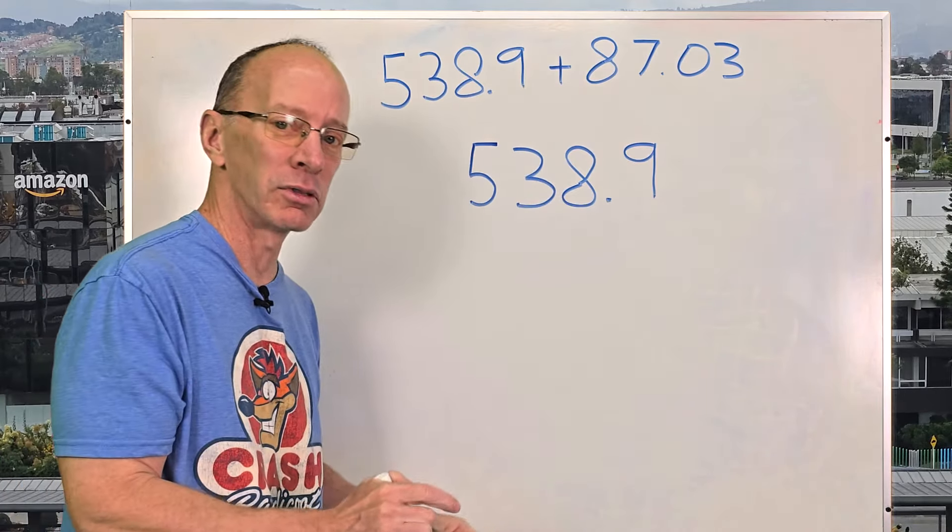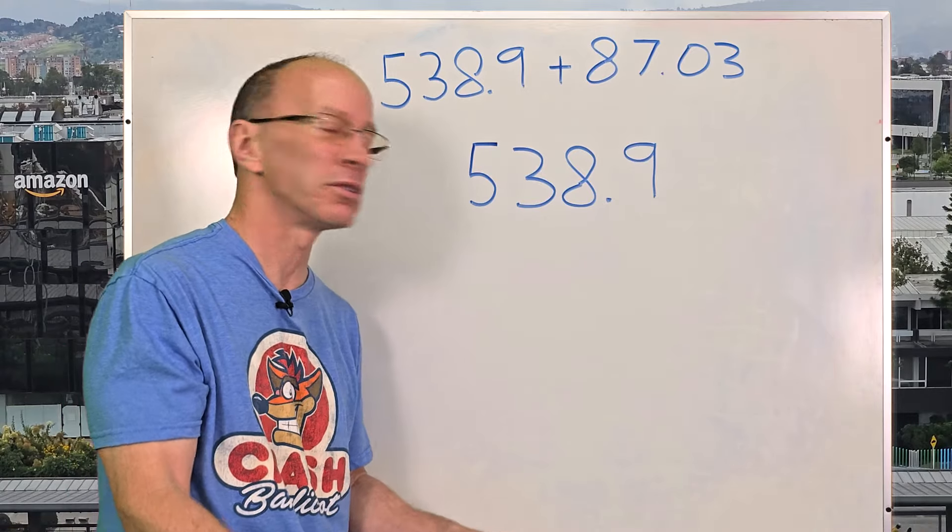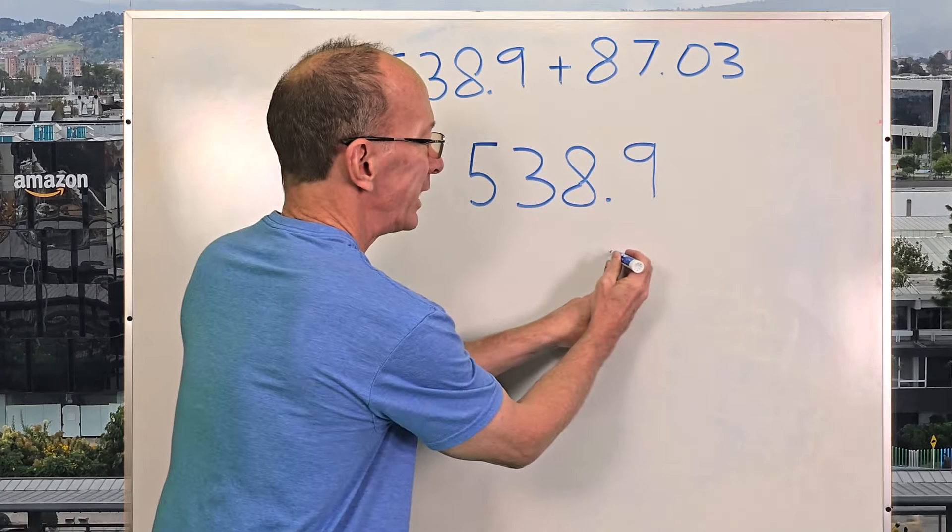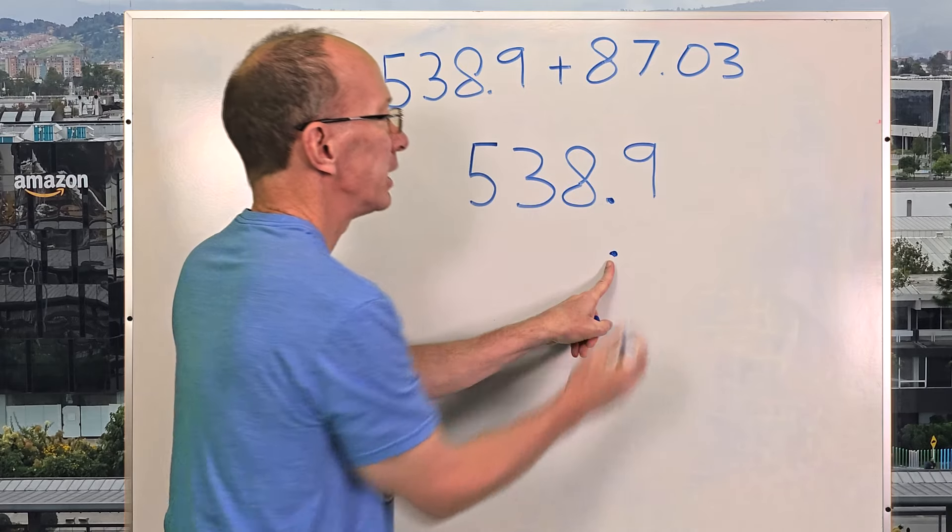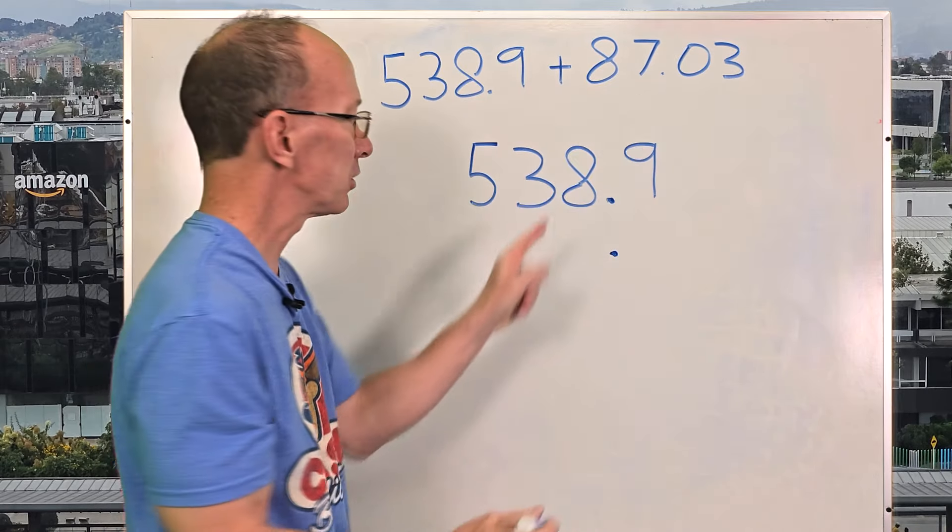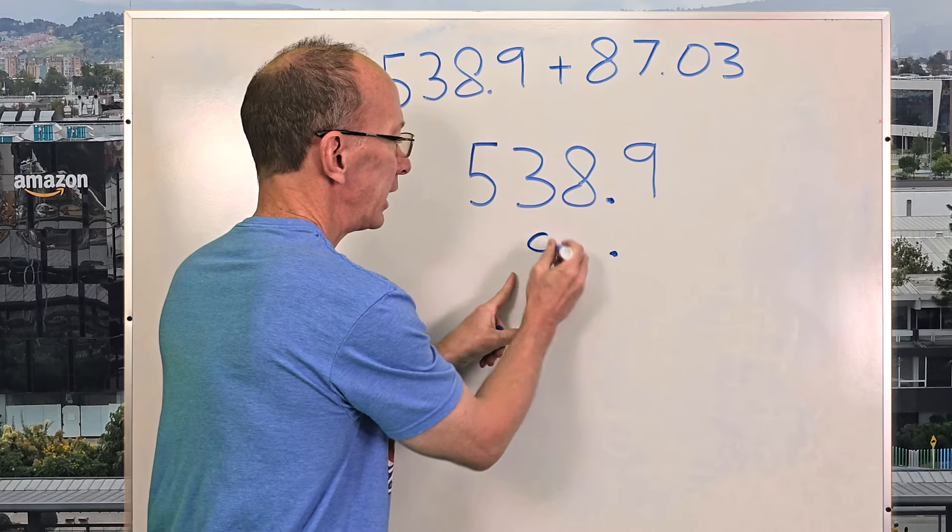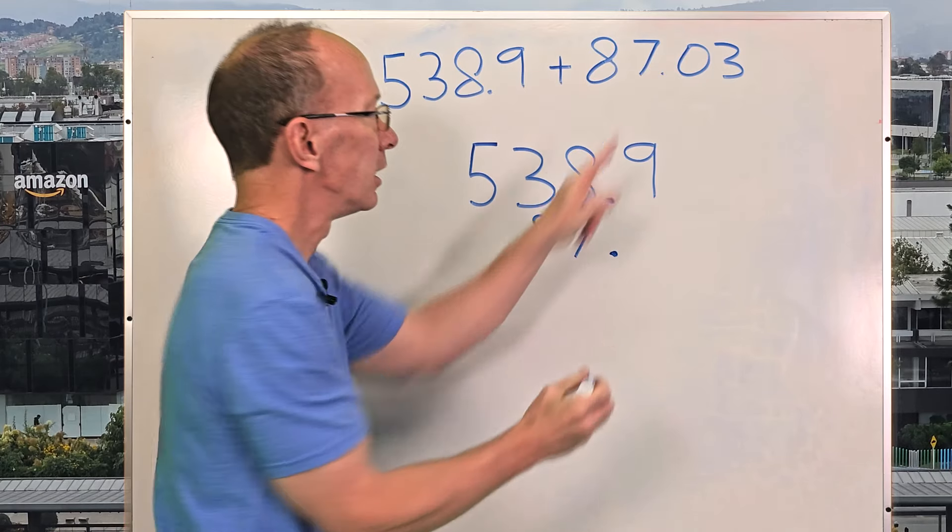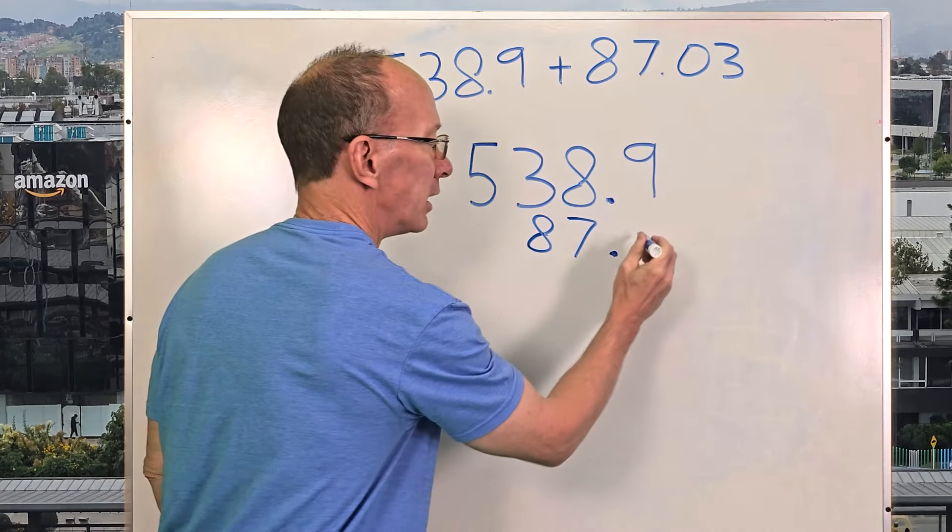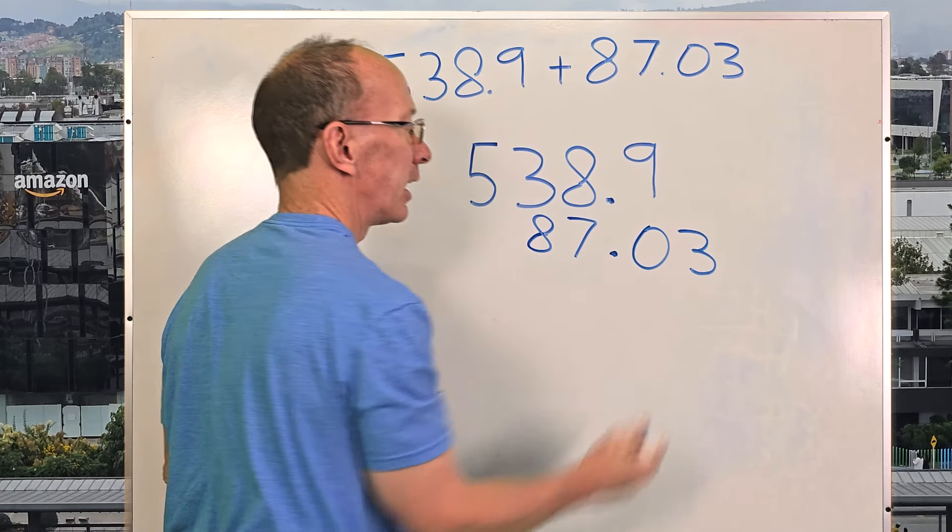When you add decimals, just line those decimals up. So I'm going to put the next decimal right here. You want it all lined up. So I'm going to have 87, so put 87 right here. 87 and then 0.03, just like that.